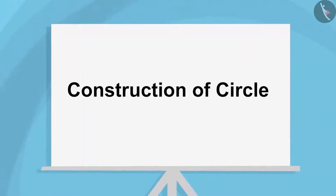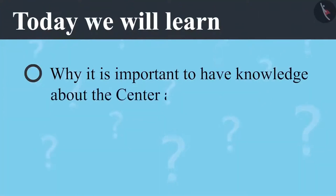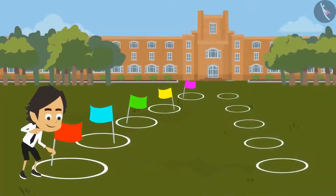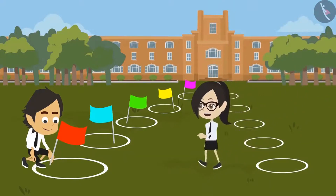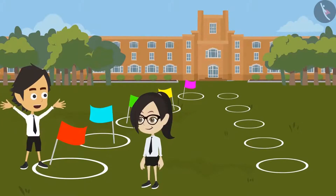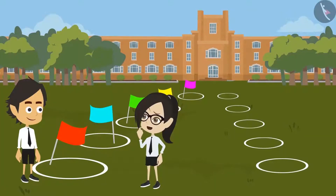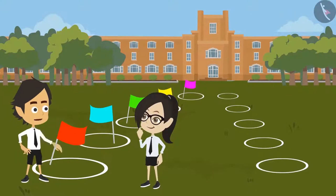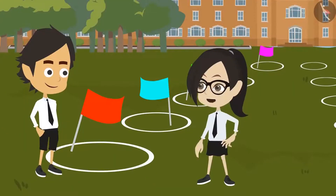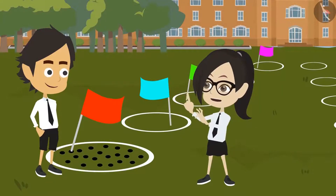Construction of Circle, Part 3. Today we will learn why it is important to have knowledge of the center and radius to make a perfect circle. Preparations for the sports day are going on and I have been given the duty to put flags in the center of these circles. The flag should be placed in the center of the circle. But you have not put any flag in the center of any circle. All flags are in the center of the circles — all are placed inside them. There are many points inside a circle.